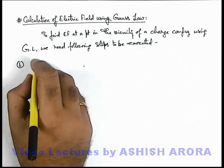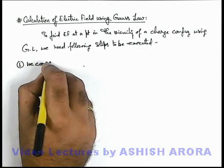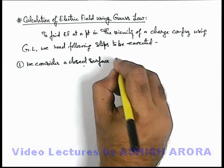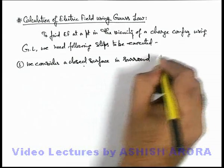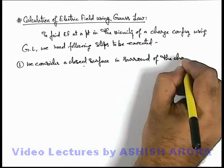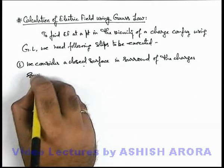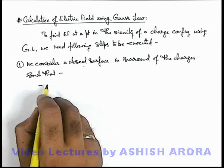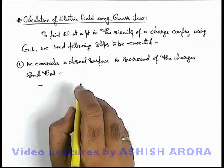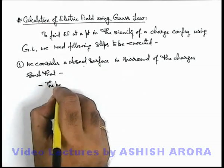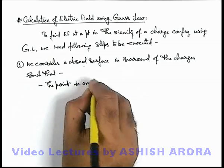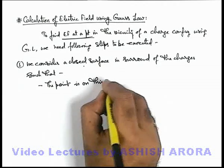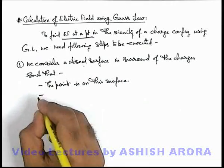The very first point is: we consider a closed surface in the surrounding of the charges, such that the point where we wish to calculate the electric field is on this surface — the point is on this surface, which is actually the Gaussian surface in our picture.